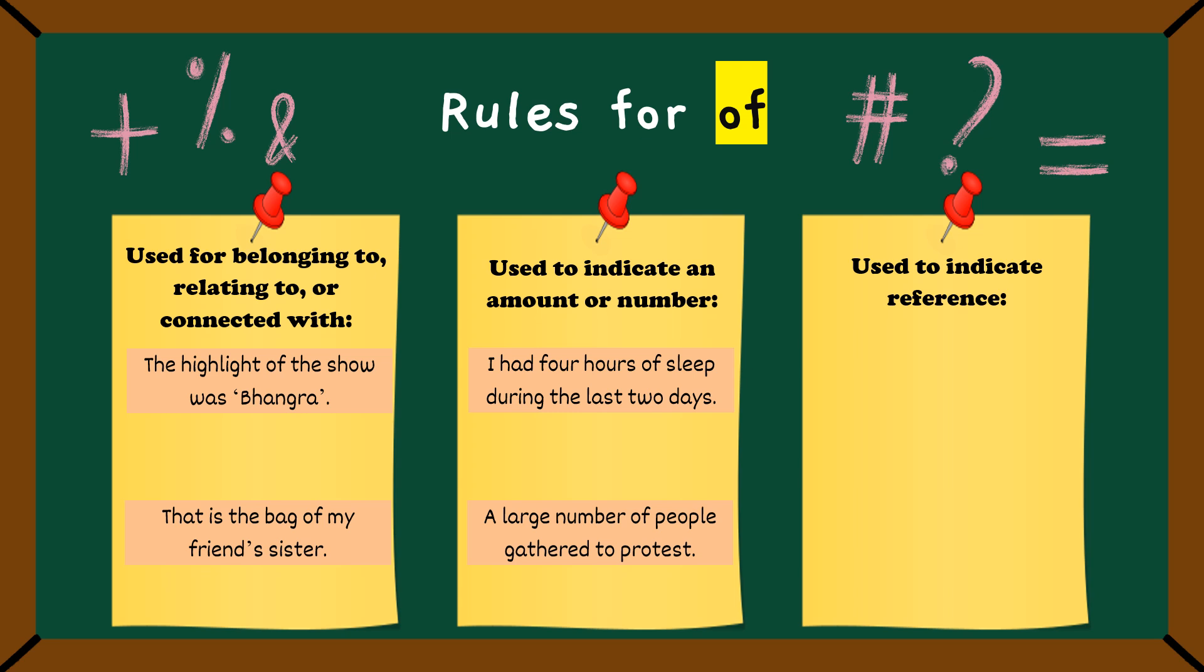And the last rule shows: indicate reference. Of can also give a reference. For example, the winner of the contest will be announced soon. Here, of connects winner to the contest. Another one: she was crowned the queen of England. It tells us she is the queen in relationship of England. Nice work. That's all for of.